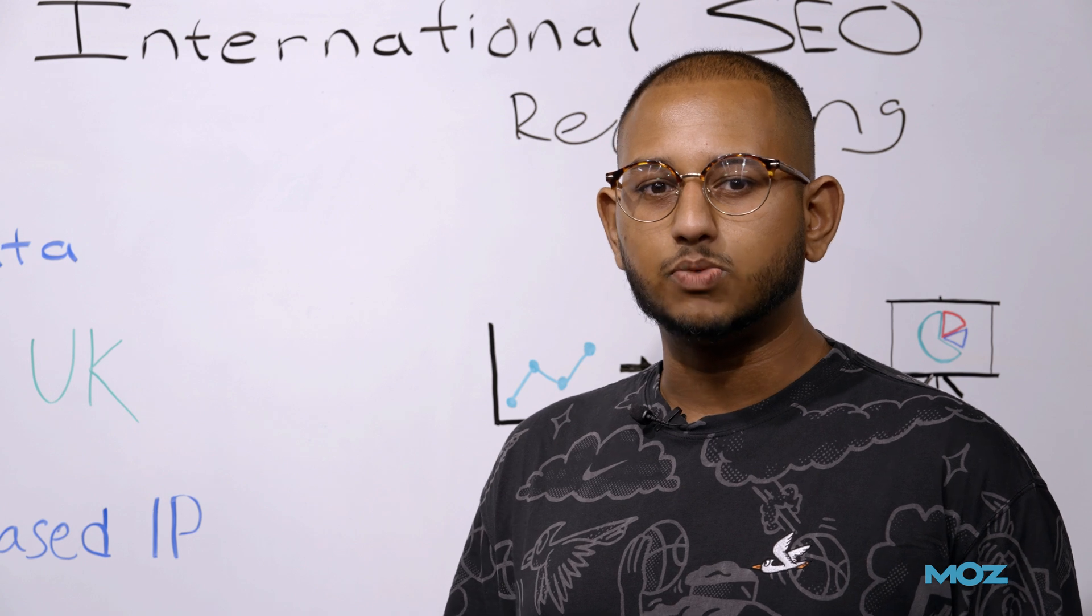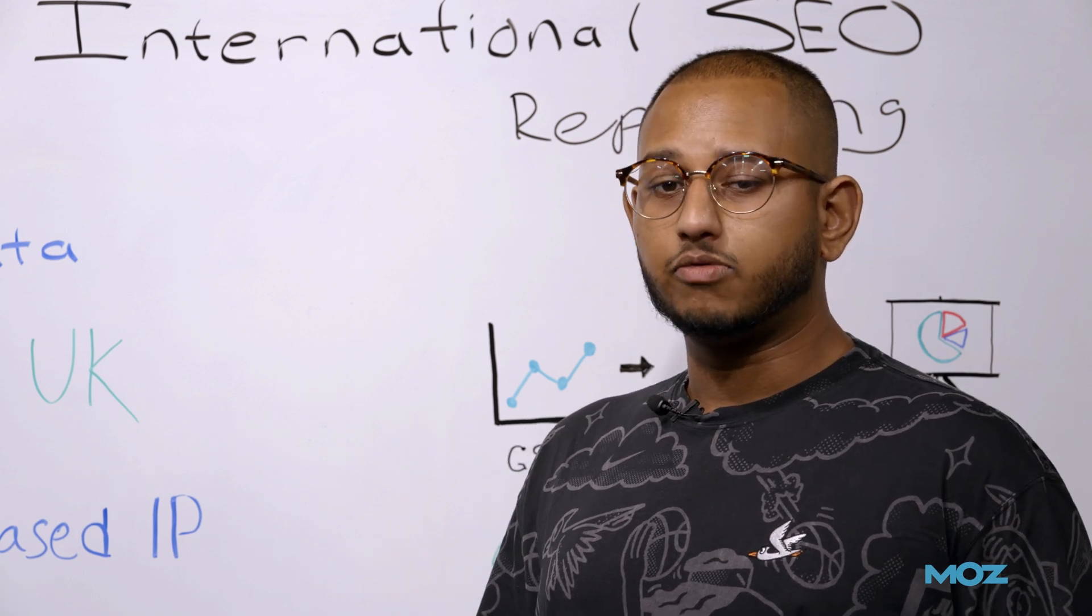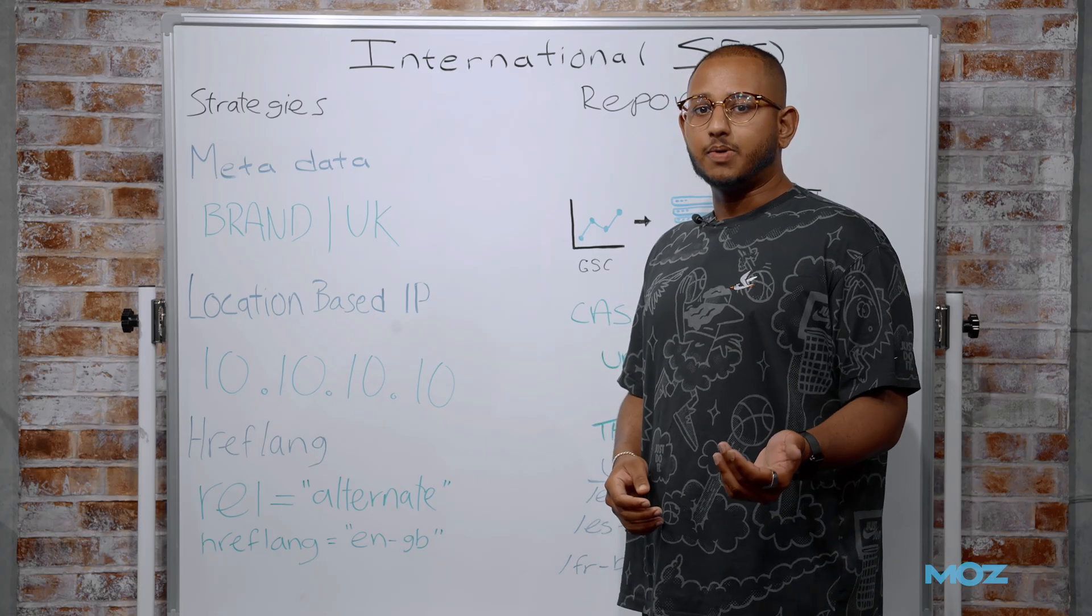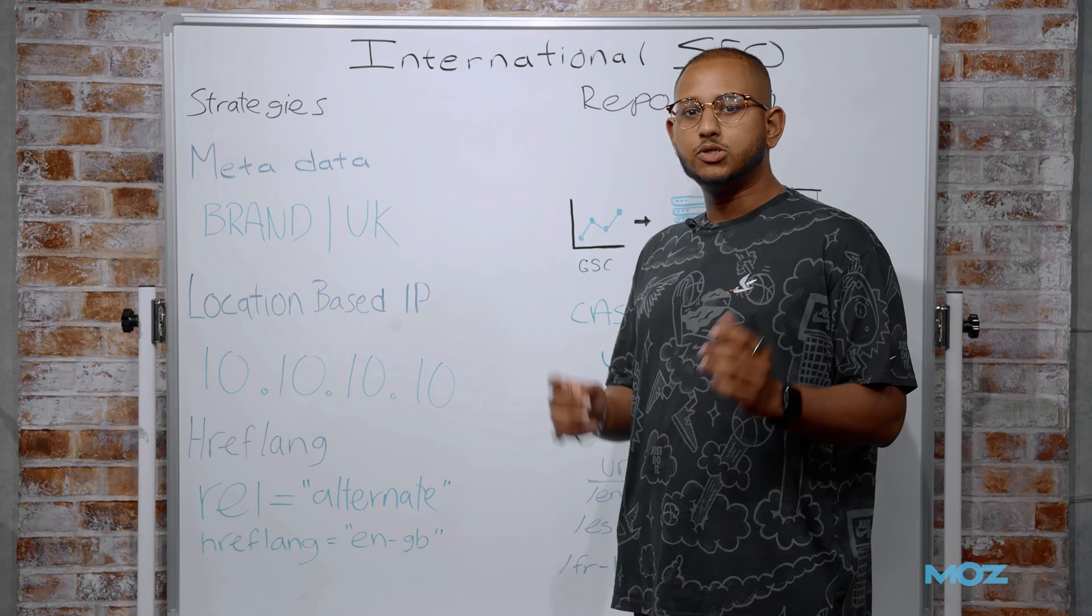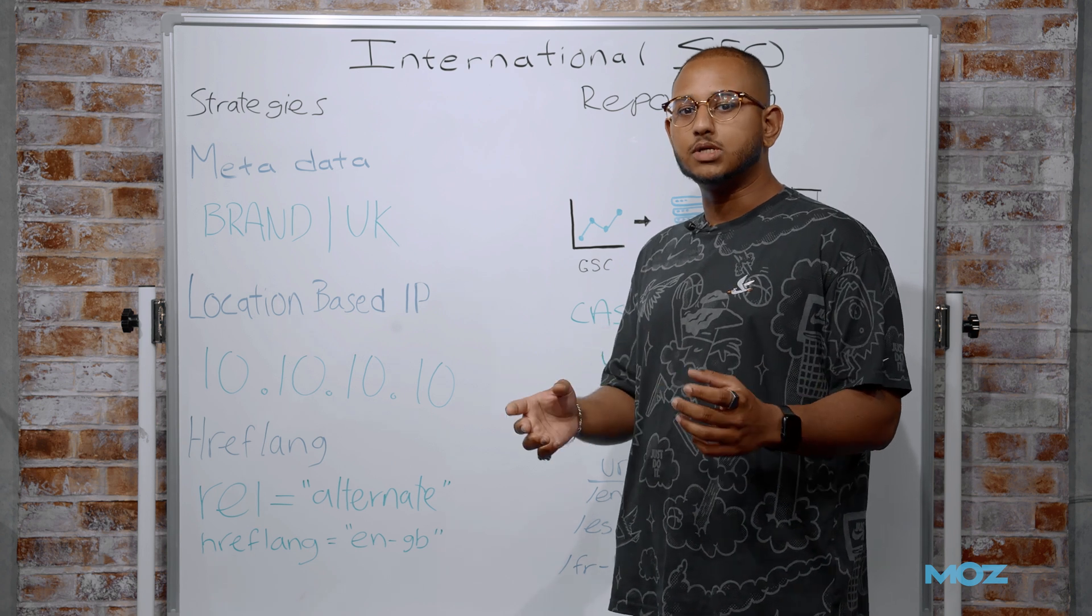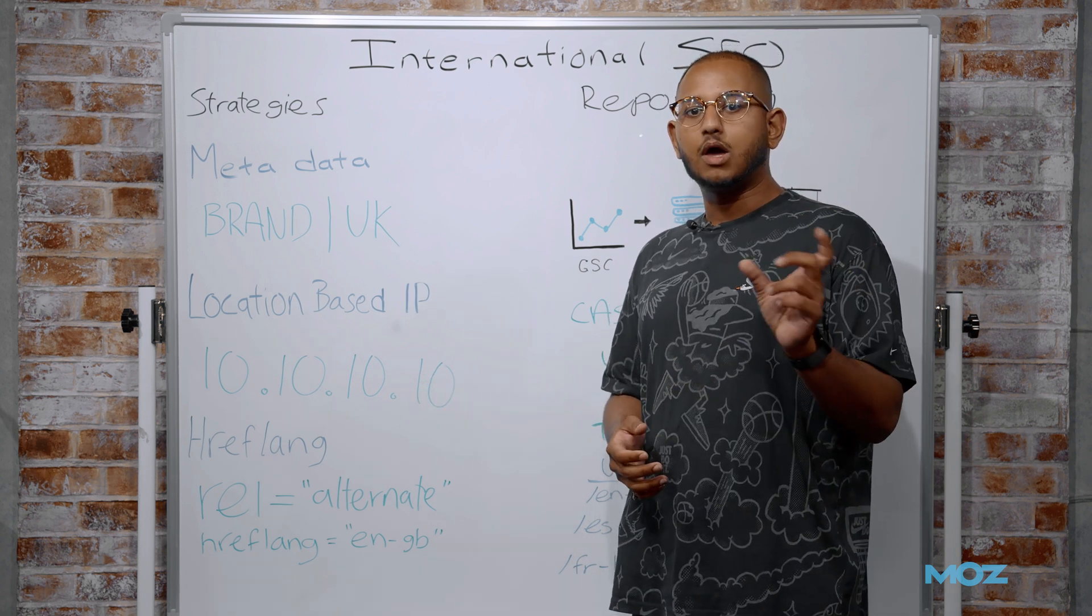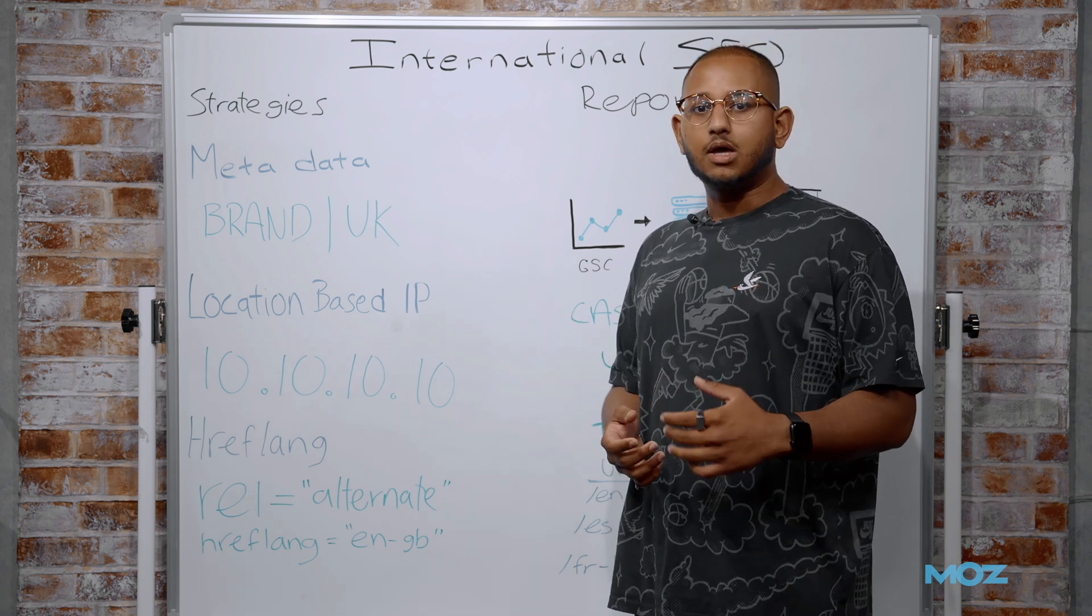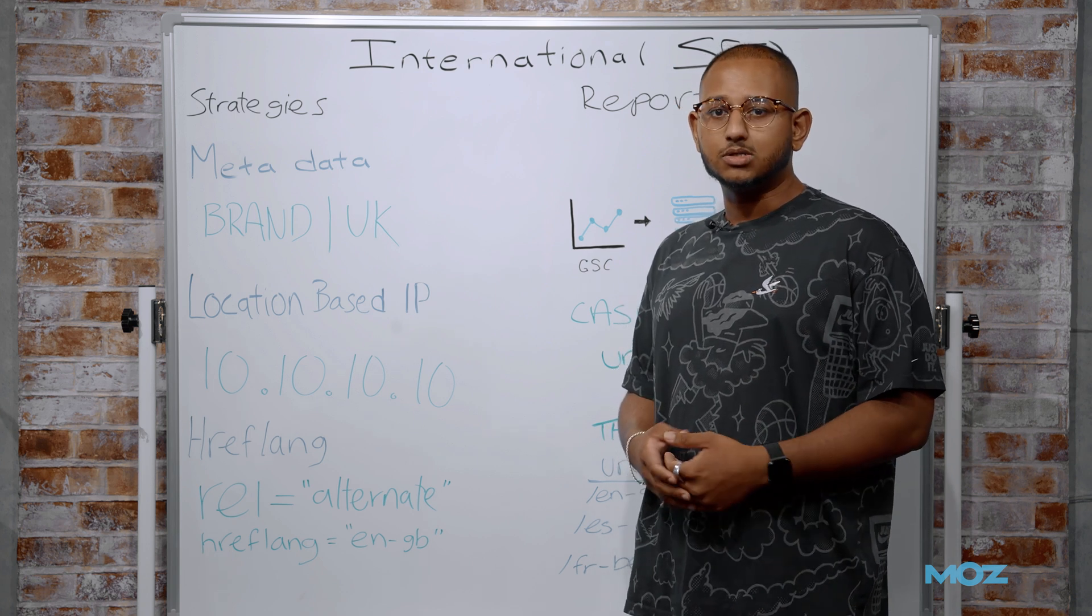There's a range of different strategies we can take when it comes to international SEO. We're going to be covering a few of those today. One of the first strategies that we can use is metadata. From an international SEO perspective, we can add an alpha 2 country code to the end of our piped branding to send both users and Google a signal saying this is the country we're targeting, and they'll see that right on the SERP. Most SEOs have access to change this, and this is arguably one of the more accessible strategies to use within international SEO.